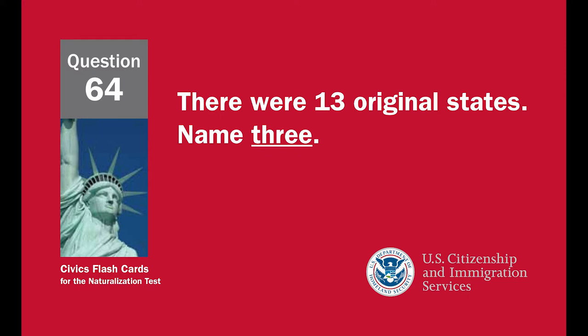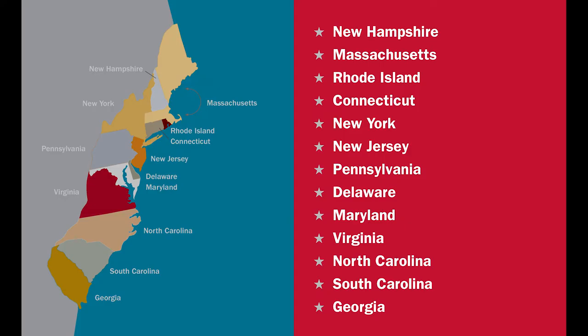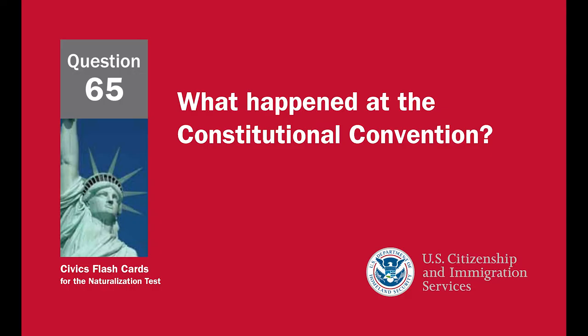There were 13 original states. Name three: New Hampshire, Massachusetts, Rhode Island, Connecticut, New York, New Jersey, Pennsylvania, Delaware, Maryland, Virginia, North Carolina, South Carolina, Georgia.